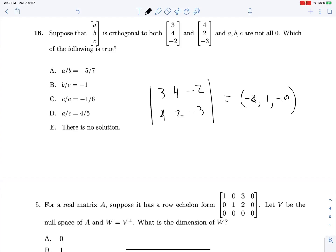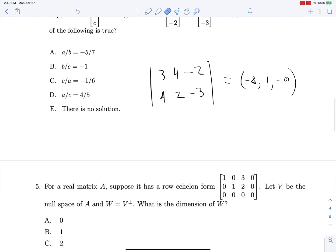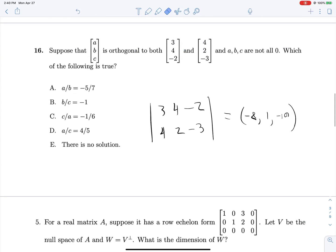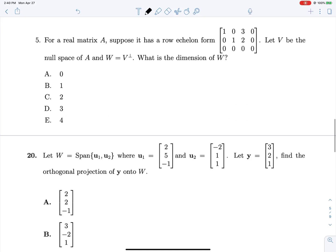Looking through these answer choices, the only one that makes sense given this cross product, we have ABC which should be proportional to negative 8, 1, negative 10. A over C will be proportional to 8 over negative 10, which is 4 over 5. So that makes sense.